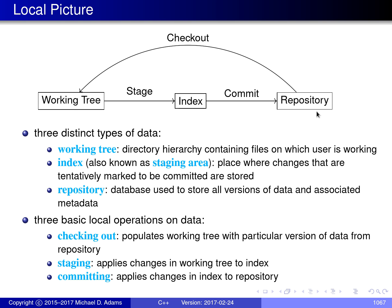There are three basic local operations a Git user can perform. The first is checking out, which populates the working tree with a particular version of data from the repository. The second is staging, which propagates changes from the working tree to the index. The third is committing, which propagates changes from the index to the repository. So to make a change in the repository, the user first modifies the working tree, then stages the change into the index, then commits the change from the index into the repository.